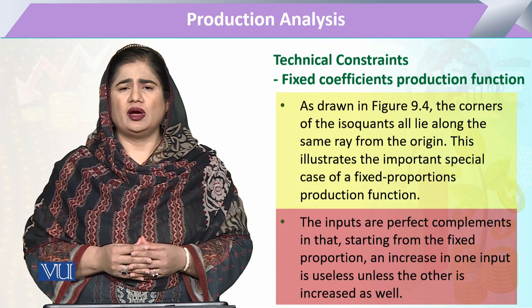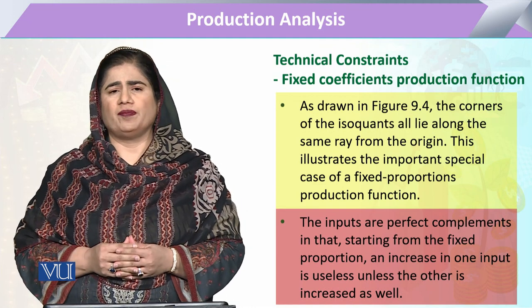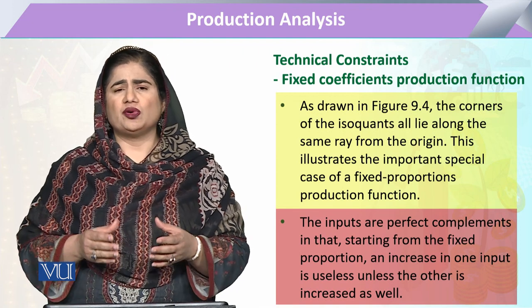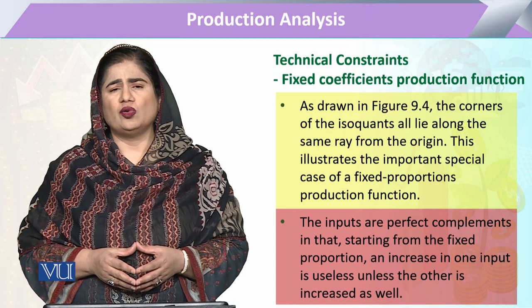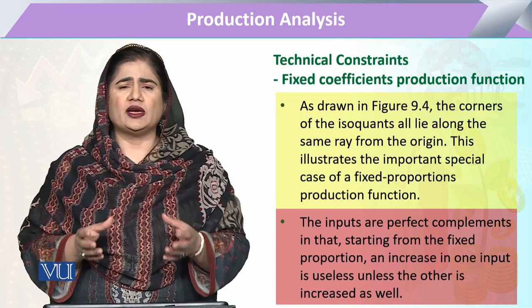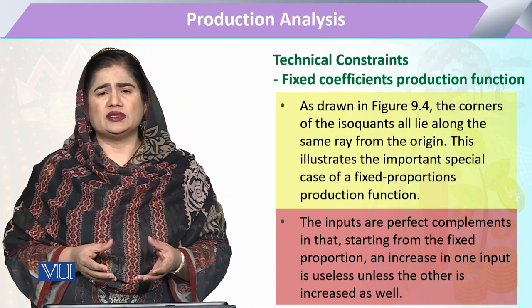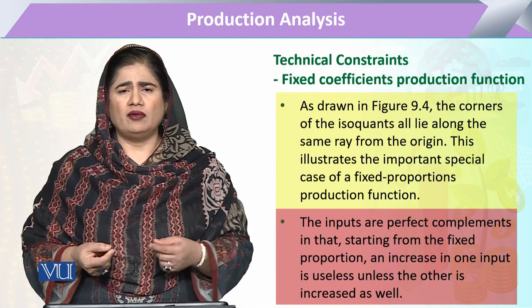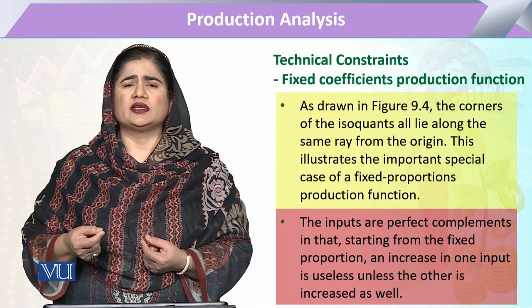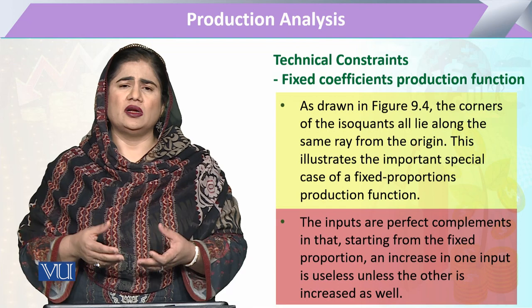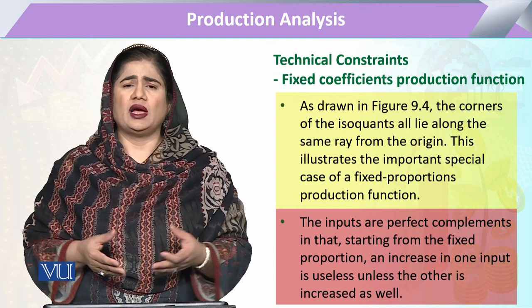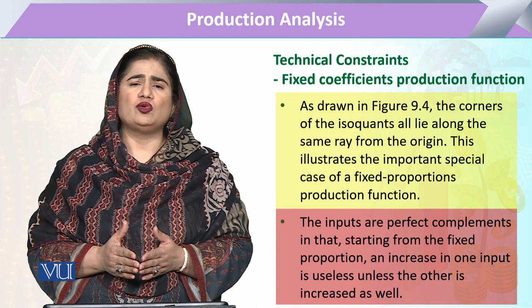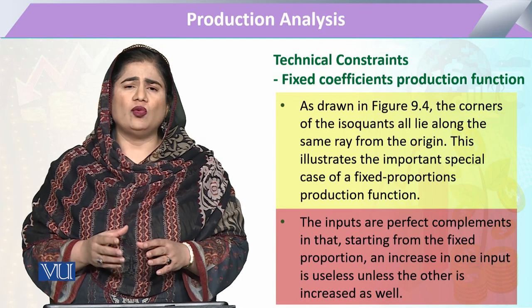The inputs utilized in this fixed proportion are essentially complements to each other — production is not possible unless that complementarity or combination is maintained. For example, a pen cannot write if ink is not used with it. Similarly, in industry, certain inputs must be utilized together in a very particular and unique manner; they are complements and cannot function independently of each other.